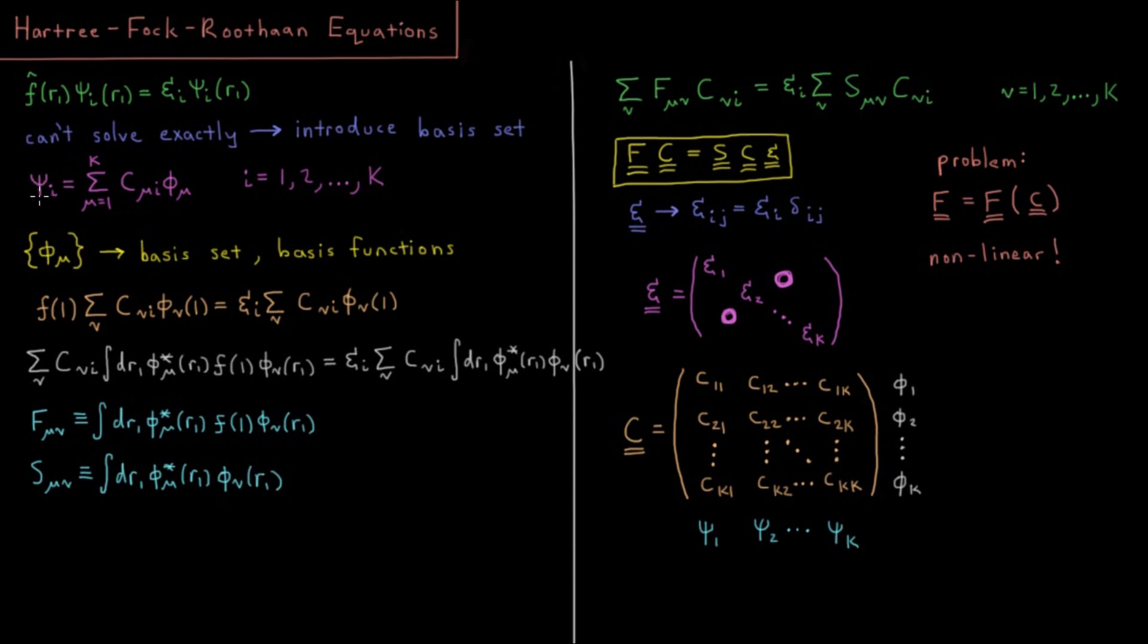This is what our spatial orbital is going to look like in our Hartree-Fock equations. If we substitute in this expression into the pseudo-eigenvalue equation, we have the Fock operator acting on this linear combination of basis functions equals the orbital energy times the linear combination of basis functions. Then we might also rearrange this by left multiplying by phi star mu and integrating with respect to the coordinates of electron one.